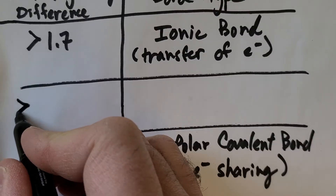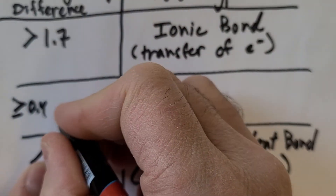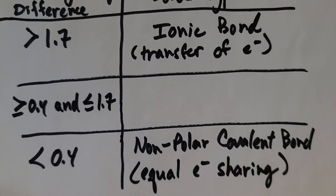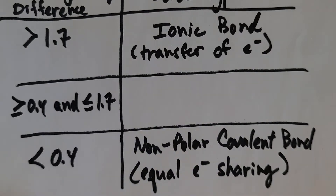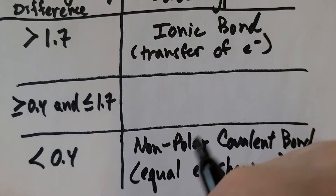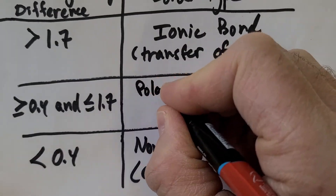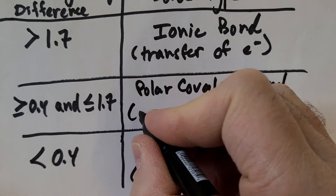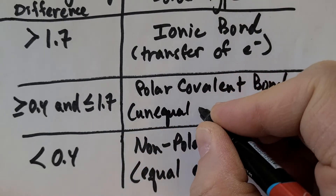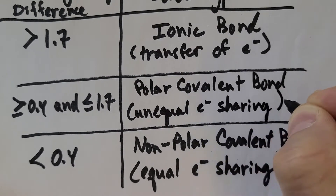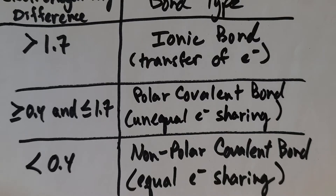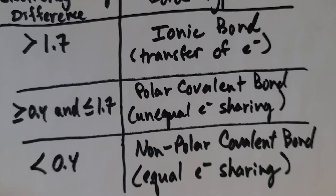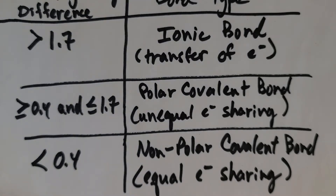Then we have the scenario where the difference is greater than or equal to 0.4 and less than or equal to 1.7. Again, we're using those as cutoff numbers, but they're not strict. In that range, it is a polar covalent bond — the electrons are still shared, but they are shared unequally.